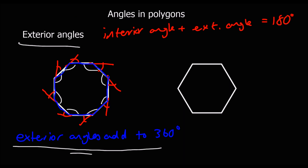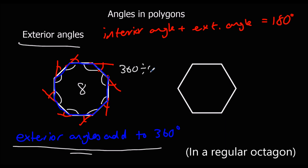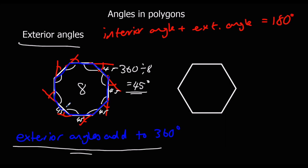So here we've got an octagon — an eight-sided shape. We can work out the size of an exterior angle by doing 360 divided by 8, so each exterior angle is 45 degrees. And then the interior angle is 180 take away 45, so 135 degrees.